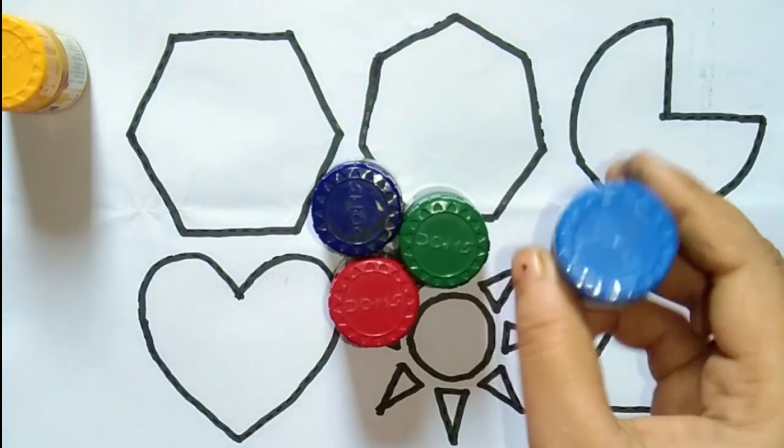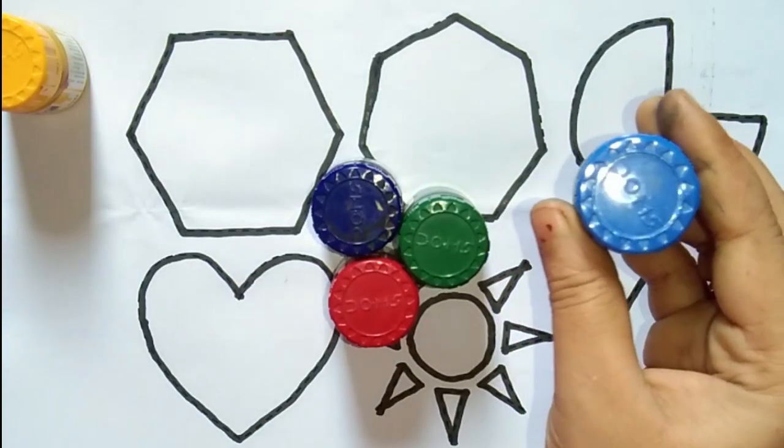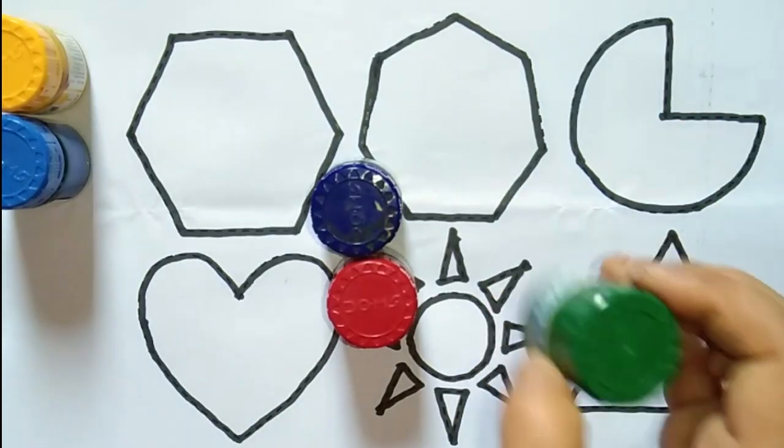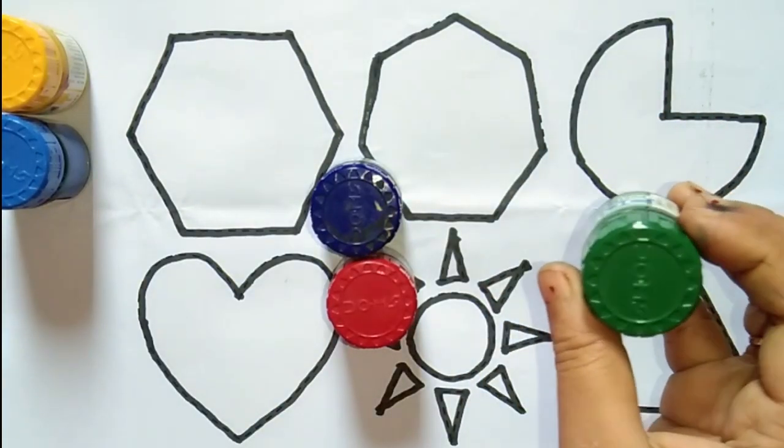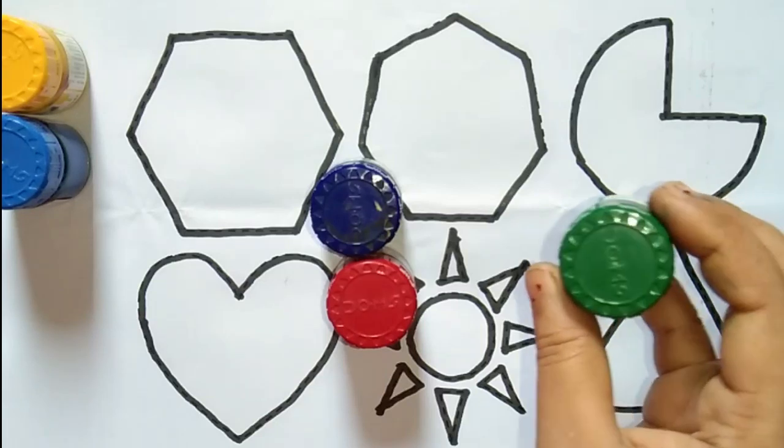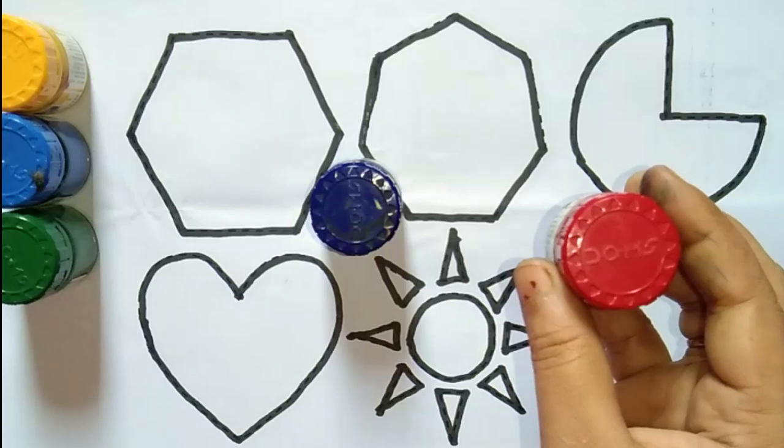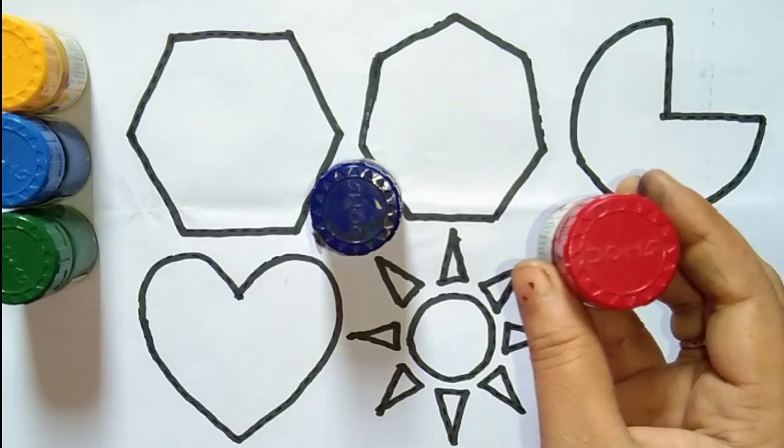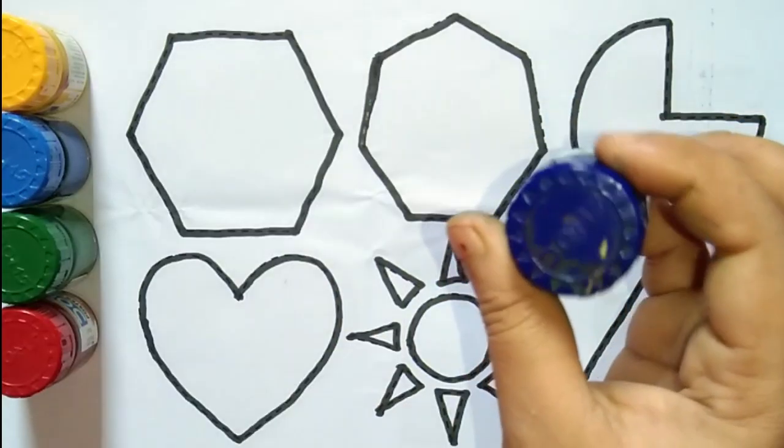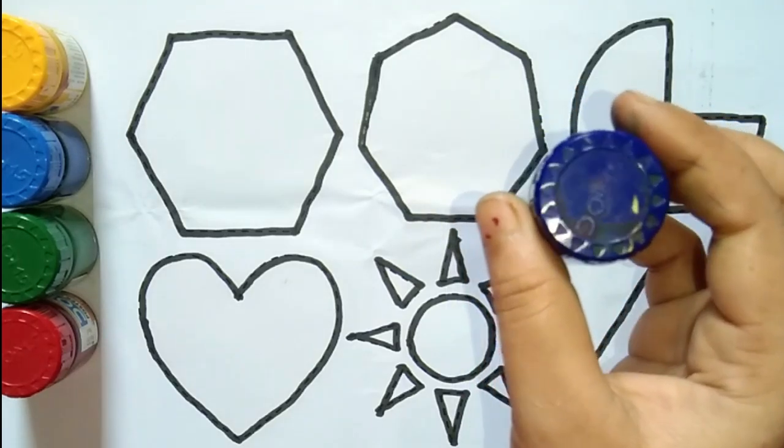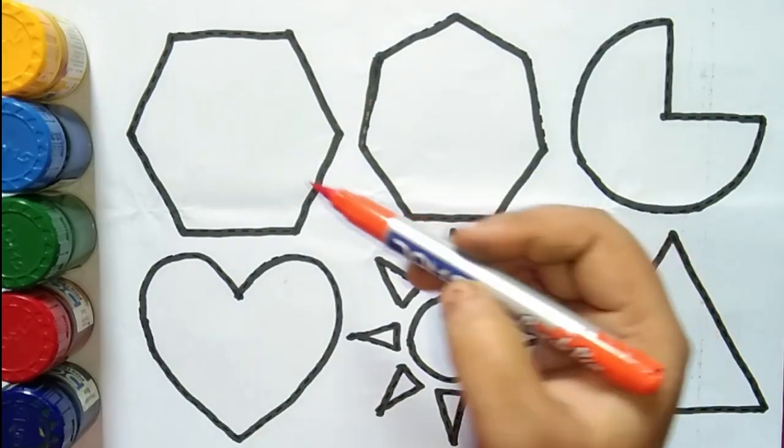This is sky blue color. Which color is this? This is sky blue color. This is green color. Which color is this? This is green color. This is red color. Which color is this? This is red color. This is blue color. Which color is this? This is blue color.